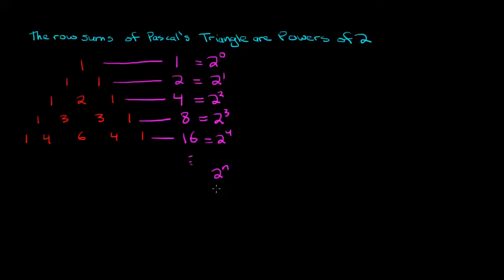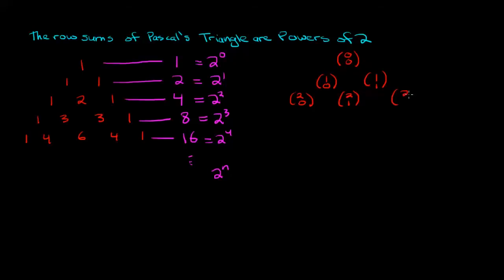Let me start by rewriting Pascal's Triangle in terms of the binomial coefficients. So the first entry is zero choose zero, then on row one I have one choose zero, one choose one, then two choose zero, two choose one, two choose two, and the next row is three choose zero, three choose one, three choose two, and three choose three, and it keeps going like this.